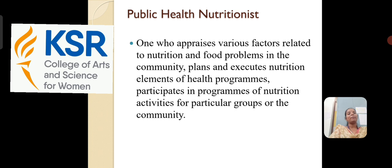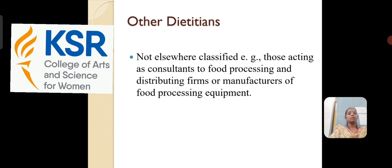The second classification is public health nutritionist. They appraise various factors related to nutrition and food problems in the community, plan and execute nutritional elements of health programs, participating in programs of nutrition activities for particular groups or community. The third one is other dietitian, not elsewhere classified — those acting as a consultant to food processing and distributing firms or manufacturers of food processing equipment.